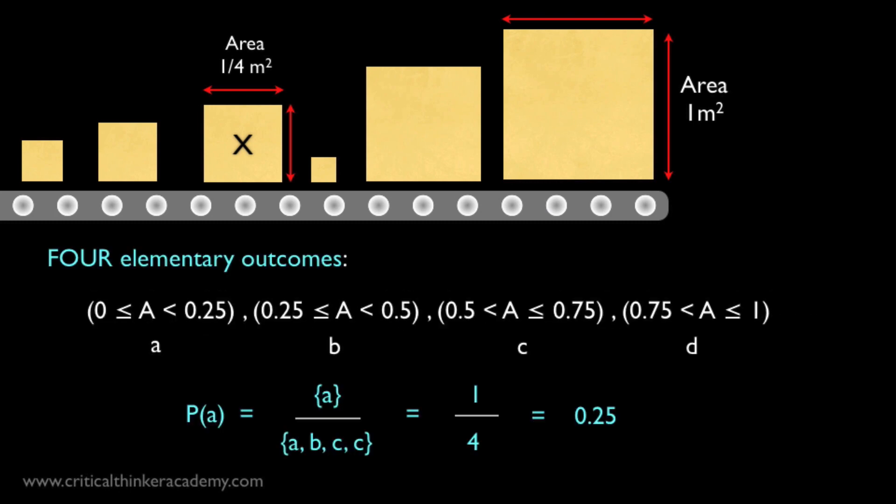Now, phrased this way, the natural answer, using the classical interpretation, is going to end up being 1 over 4, instead of 1 half. Why? Because it's natural to now consider four equally possible event types. Picking a cube with an area between 0 and 1 quarter square meters, picking a cube between 1 quarter and 1 half square meters, picking a cube between 1 half and 3 quarter square meters, and picking a cube between 3 quarter and 1 square meter. We don't have any reason to think that one of these outcomes is more likely than any other. So the principle of indifference will tell us to assign equal probabilities to each. Our favorable outcome is just one out of these four equally possible outcomes. So the numerator is 1, and the denominator is 4, giving 1 over 4.